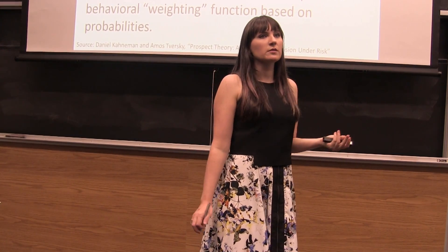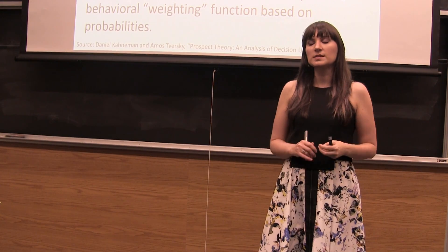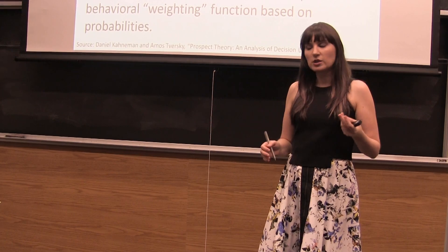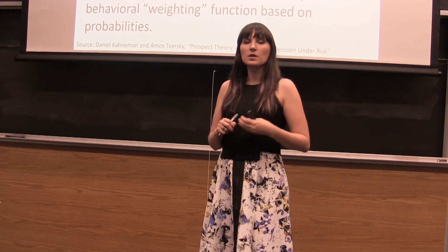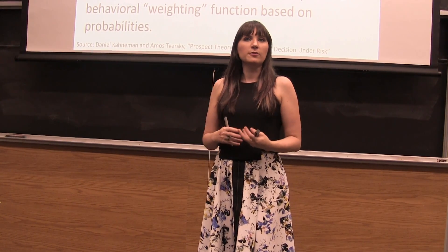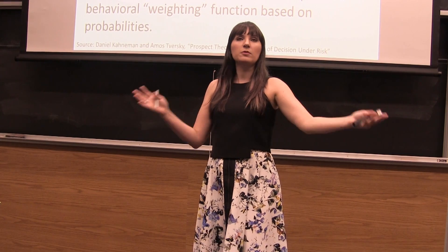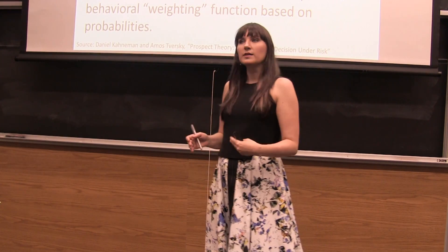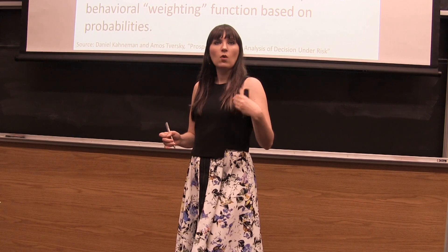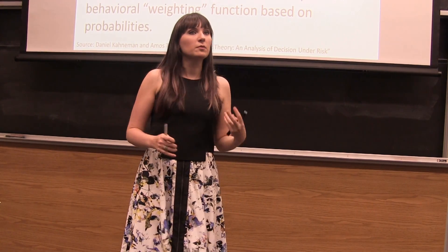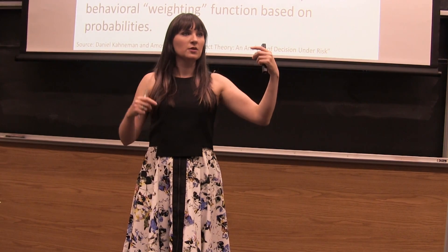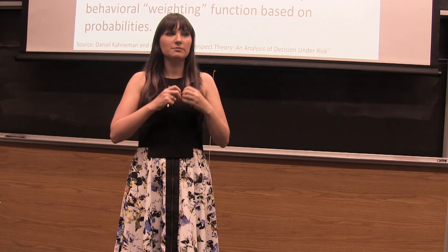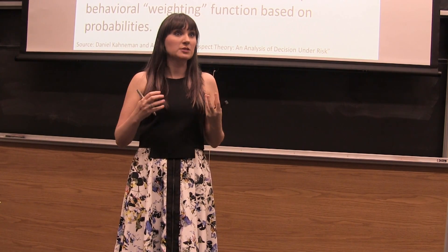Think about people who play the lotto. We can't really perceive how small one in however many million the chance of winning is. Psychologically, therefore, if people aren't rounding that to zero — and people that are rounding it to zero are just not playing the lotto — one explanation for why people might play is because they're psychologically overweighting that probability, because it's something we just don't objectively get our minds around.